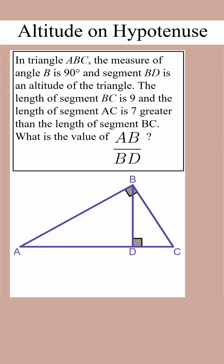In this example, segment BC is 9. The length of segment AC is 7 greater. That means 9 plus 7 is 16, so the length of segment AC is 16.